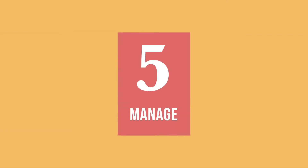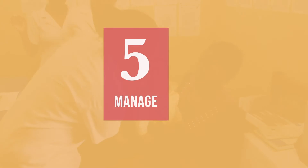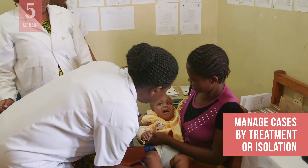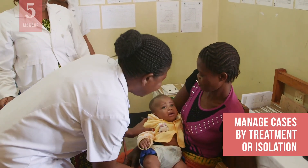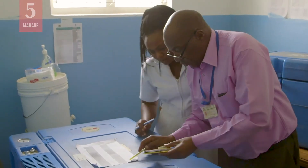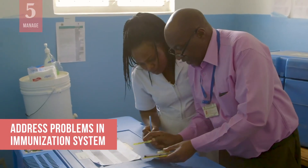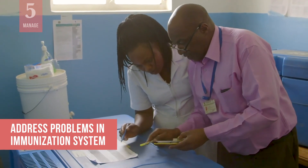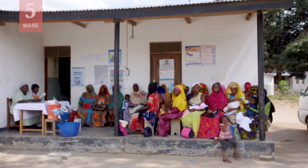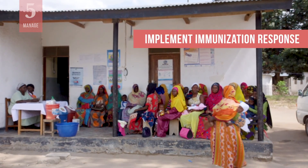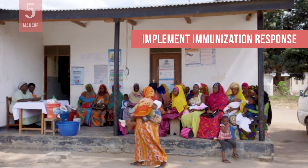You will also need to manage the outbreak as early as possible. This can include a range of activities including treatment of cases or isolation to prevent additional spread. In some cases, you may need to address problems in the immunization system such as the cold chain. Depending on national policy, the response may also require a rapid, focused immunization response.